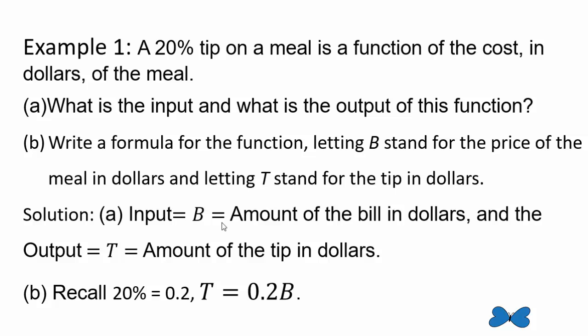So our tip T is going to be 0.2 times B. B is the amount of dollars that the meal cost. So 0.2 times B. So T equals 0.2 times B is our formula. T is the dependent variable and B is the independent variable.